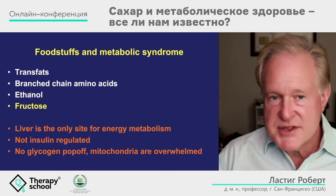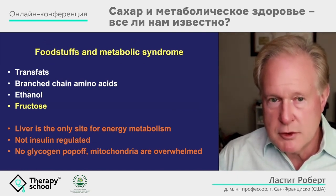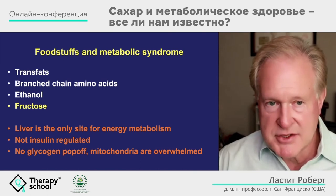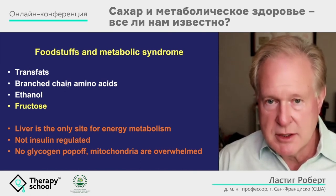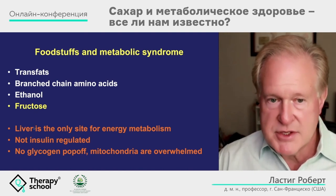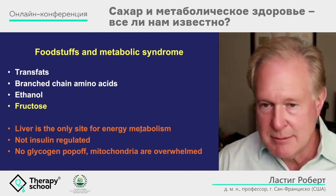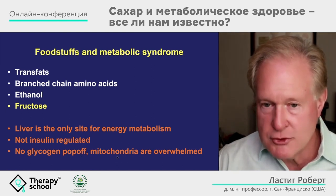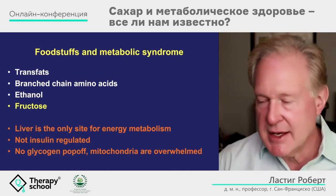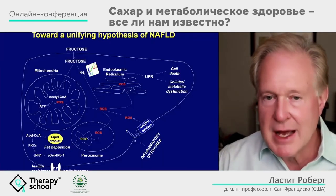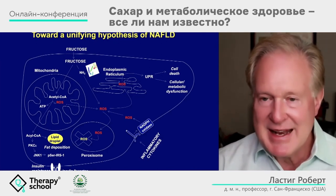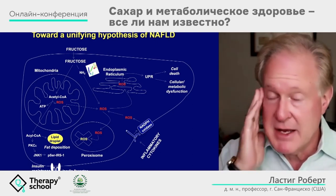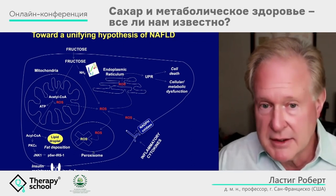There are four separate foodstuffs that can drive de novo lipogenesis and metabolic syndrome: trans fats, branched-chain amino acids, alcohol, and fructose. The reason is that the liver is the only site for their energy metabolism — this process is not insulin-regulated and there is no glycogen pop-off, so the mitochondria become overwhelmed. Mitochondrial health is metabolic health. Anything that causes your mitochondria to not work well leads to fatty liver, insulin resistance, and all the chronic metabolic diseases we've discussed.